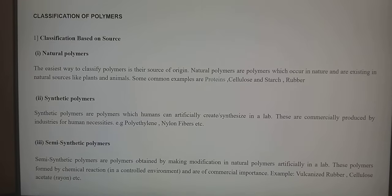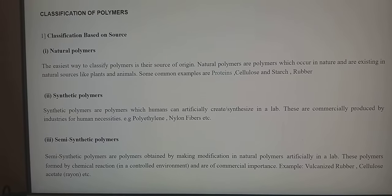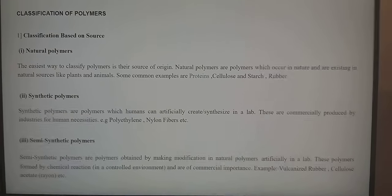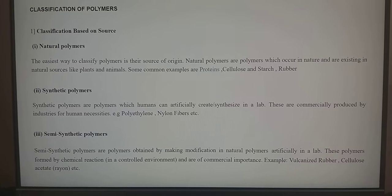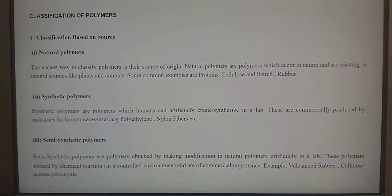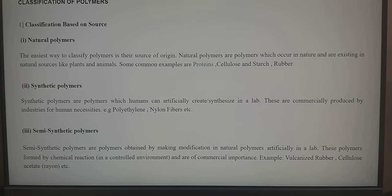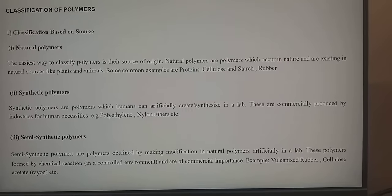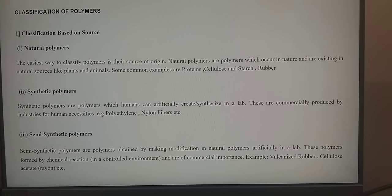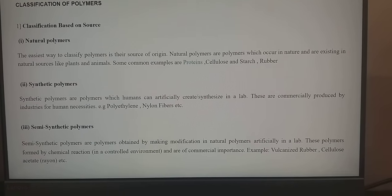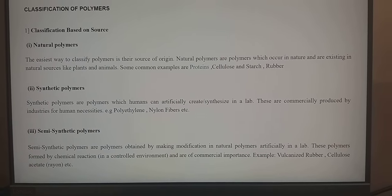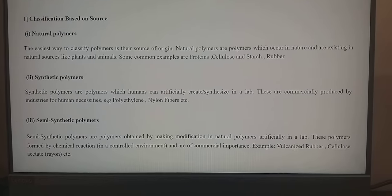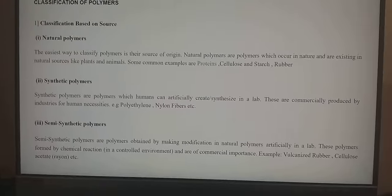Synthetic polymers are those which humans can artificially create or synthesize in the lab. These are commercially produced by industries for human necessities. Examples include polyethylene, nylon fibers, polystyrene, polyvinyl chloride, and many others. Semi-synthetic polymers are obtained by making modifications to natural polymers artificially in a lab. These polymers form through biochemical reactions in a controlled environment and are of commercial importance — for example, vulcanized rubber and cellulose acetate, also known as rayon.